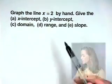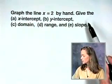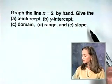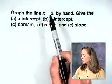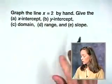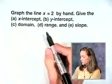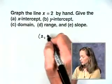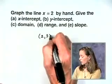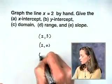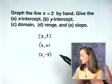From here we move on to the other special case: vertical lines. Vertical lines have undefined slope. We're going to graph the line x equals 2 by hand, and give the x intercept, y intercept, domain, range, and slope. For this line, x is fixed to be 2. To come up with three ordered pairs, we use 2 for x and can pick anything for y — let's use 3, 0, and negative 3.